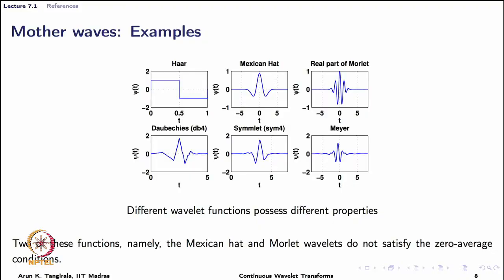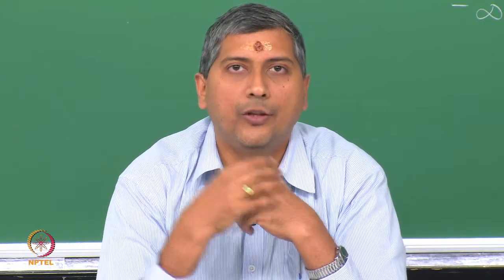Examples of mother wavelets include the Haar wavelet, historically the first known wavelet, which has a discontinuous nature. The Mexican hat and real part of Morlet — since Morlet waves are complex — both belong to the Gaussian family. Then there is the Daubechies wavelet, which has nice properties for discrete wavelet transforms, symlets which are similar to Daubechies but with different phase characteristics, and the Meyer wavelet.